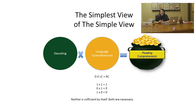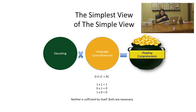Similarly, if language comprehension is missing — and by that they were talking about the ability to derive meaning from spoken words as they appear in a sentence or in discourse — this includes receptive vocabulary, understanding grammar, and understanding discourse. If that language comprehension is missing for a passage, comprehension won't occur.